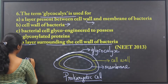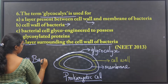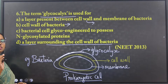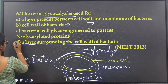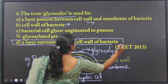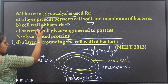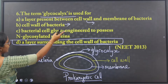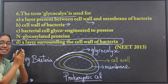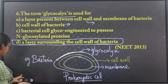The prokaryotic cell example is bacteria. The answer is: glycocalyx is a layer surrounding the cell wall of the bacteria. It is not the cell wall itself, and it is not a layer present between the cell wall and the membrane.